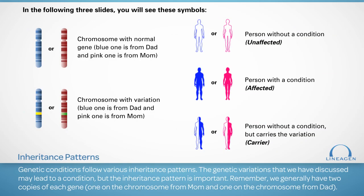When discussing basic genetic concepts, it is important to review inheritance patterns. These describe the way in which conditions may be passed from one generation to the next. Remember, we generally have two copies of each gene — one on the chromosome from mom and one from dad. In these images, a blue chromosome is inherited from the father and a red from the mother. Colored bands represent genetic variations. A character with only an outline does not have symptoms, a filled character does have symptoms, and a half-filled character is a carrier — someone who has the genetic variation and may pass it on but does not have symptoms.